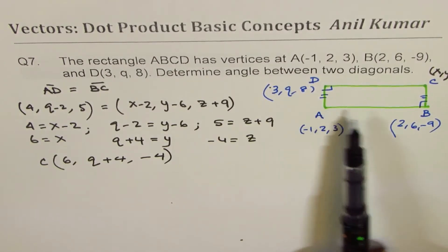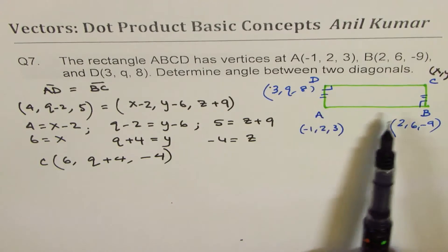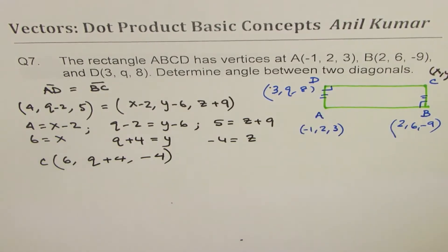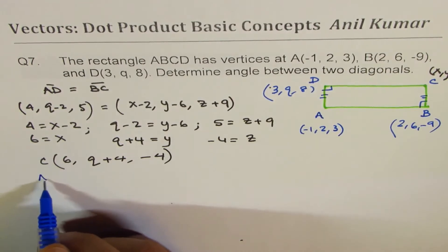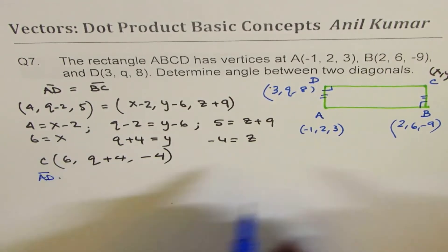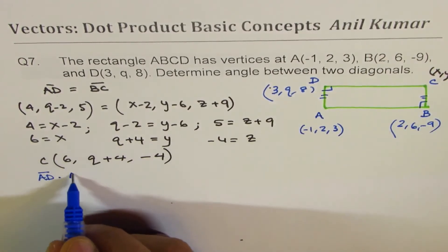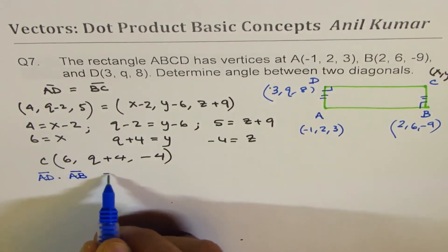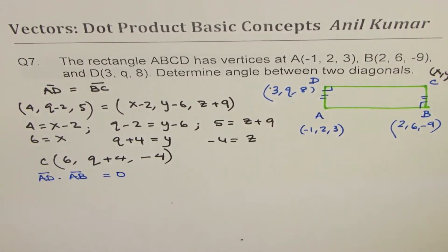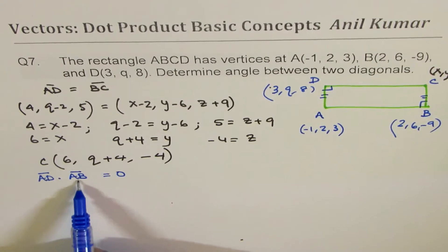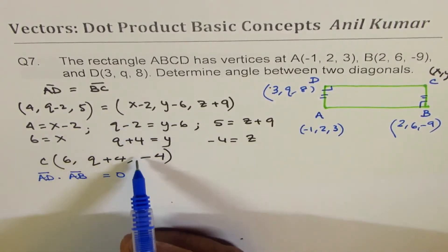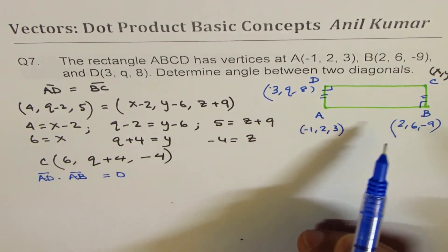Now to find Q, the dot product between AB and AD is 0. So what we are going to use is that AD·AB = 0. We could have done this initially. Now let's do it.